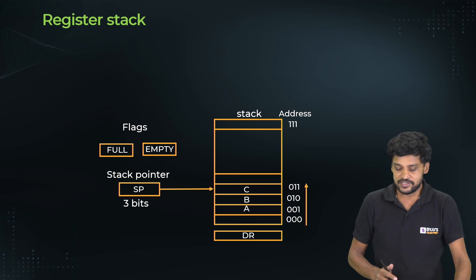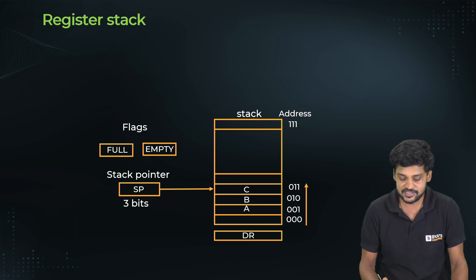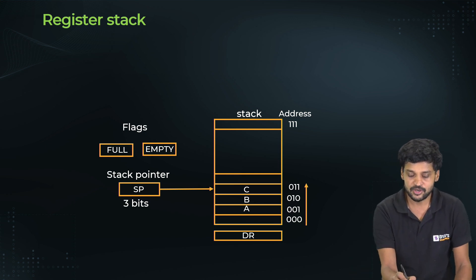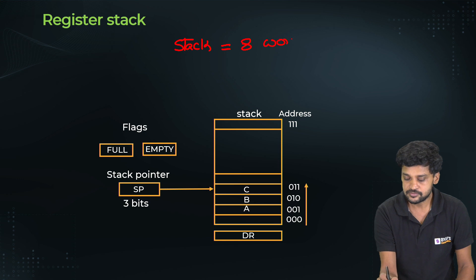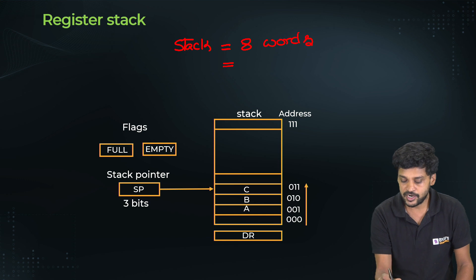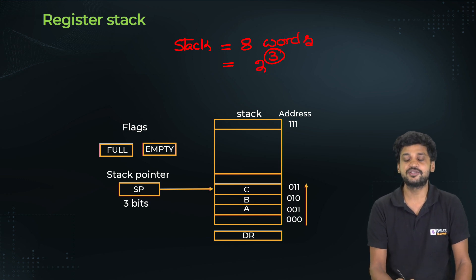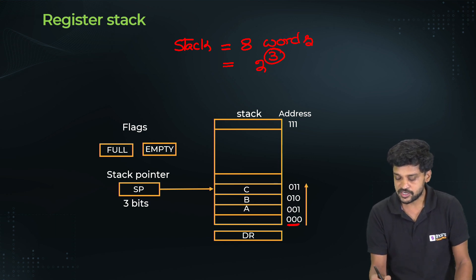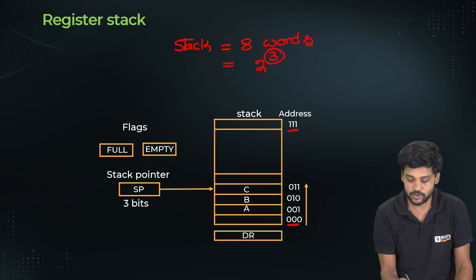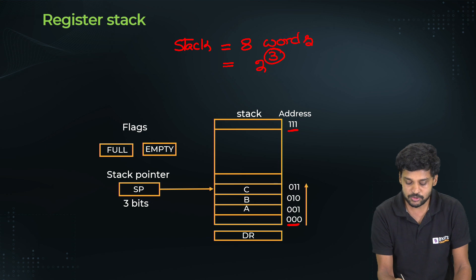Now let's understand the boundary of a register stack. The stack size is equal to 8 words. That means we require 3 bits for addressing the stack — every location will have a 3-bit address. Therefore the stack pointer size must also equal 3 bits.